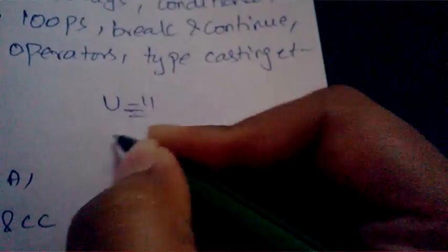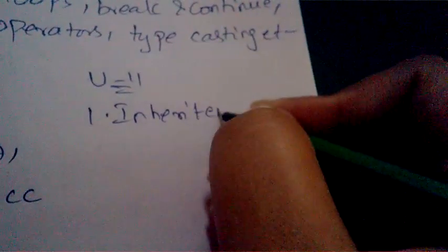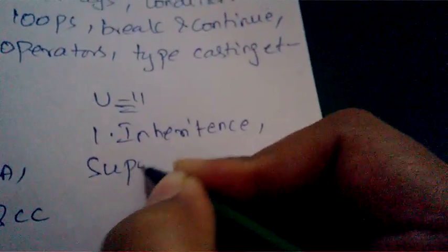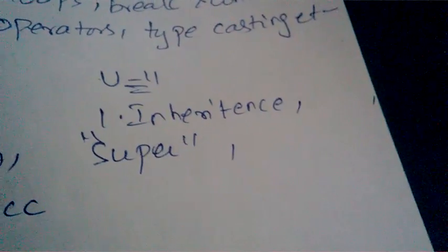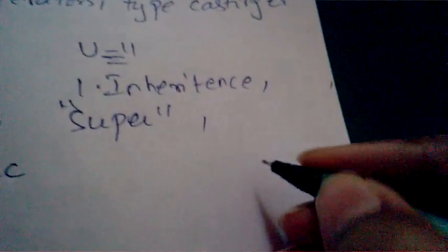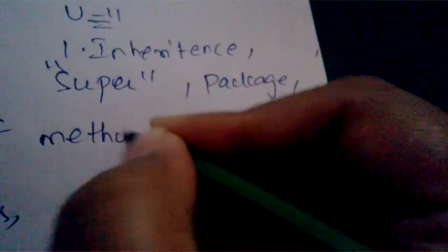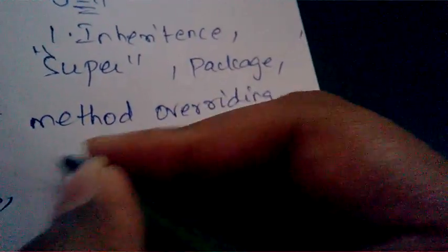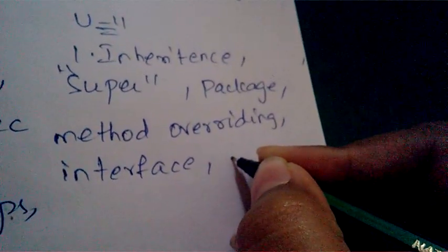Coming to Unit Two, the important questions are: explain the concept of inheritance, why do we use the super keyword, what are the advantages, what are the different kinds of packages, explain the package concept, and what is method overloading and overriding.